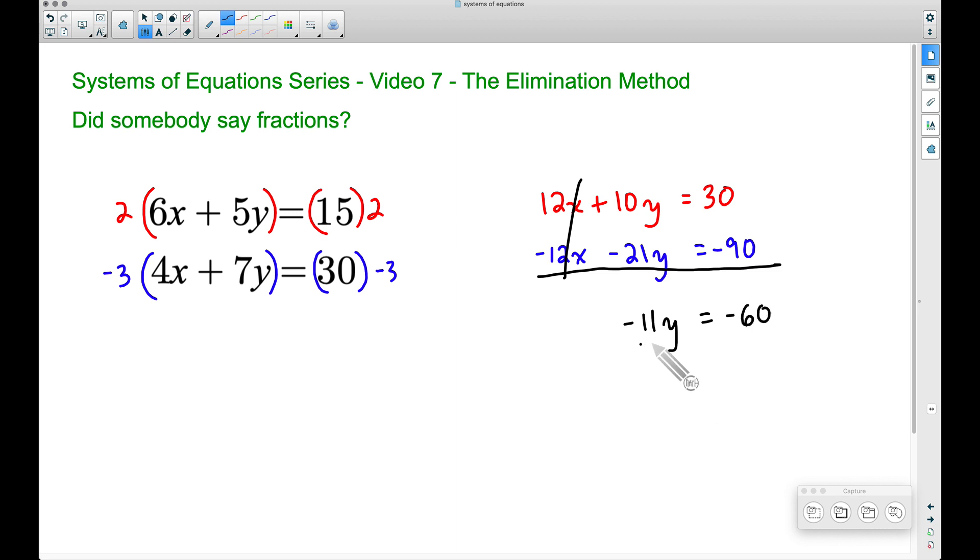Let's get y by itself by dividing both sides by negative 11, and our final answer for y, totally simplified, is 60 over 11. A negative divided by negative is a positive.